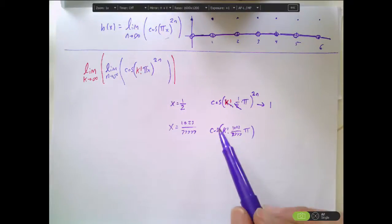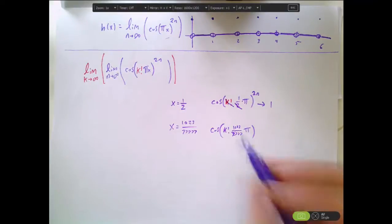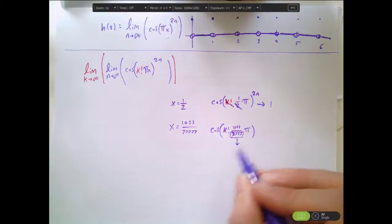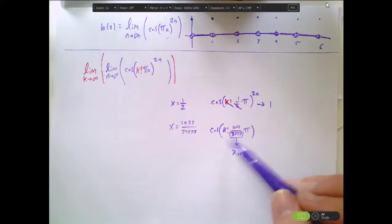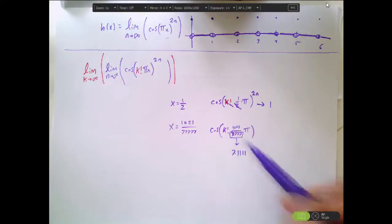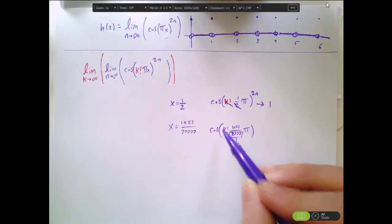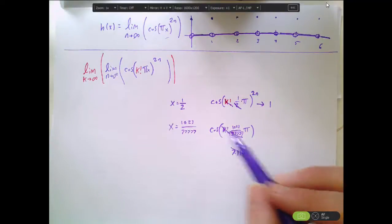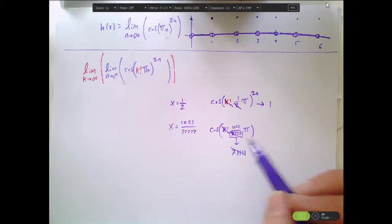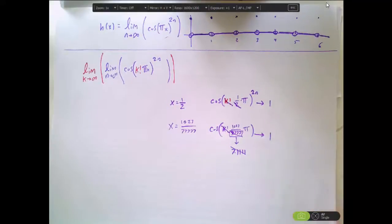Hold on. How do I know that it's going to cancel out the 77777 exactly? The reason why is because I can rewrite the denominator here as its prime decomposition. The prime factorization of 77777 is 7 times 1111. And as we can see, as k approaches infinity, eventually k is going to be large enough that both 7 and 1111 occur in the expansion of k factorial. So that's how I know that as k approaches infinity, it doesn't matter what the denominator is. Eventually, k factorial is going to cancel it out, and then we're going to have a positive integer multiple of π, which means that we'll get a 1 out.